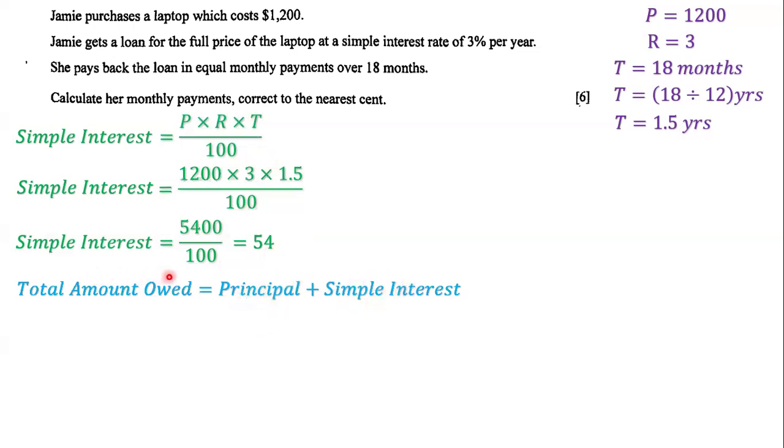The total amount owed equals principal plus simple interest, which is 1,200 plus 54. When we add them, we get 1,254.